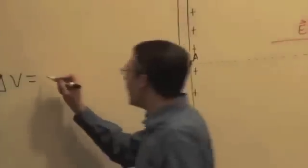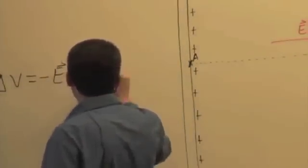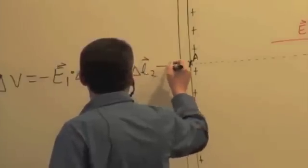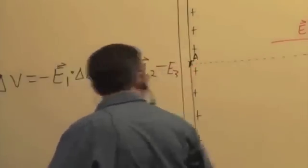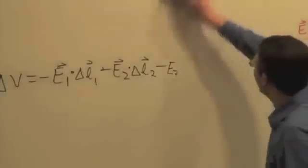Add them up. So we have an E1 dot delta L1, minus an E2 dot delta L2, minus an E3 dot delta L3.